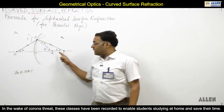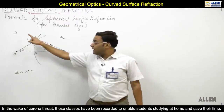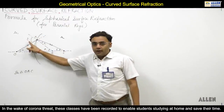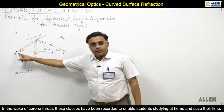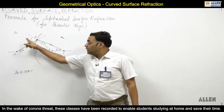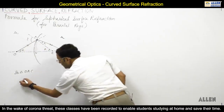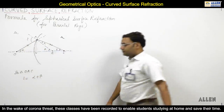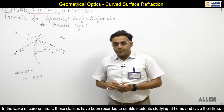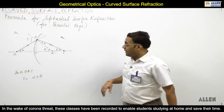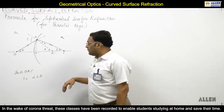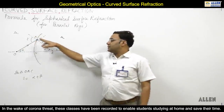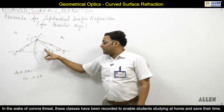This angle I is equal to alpha plus beta — that is, I equals alpha plus beta. And if I look at triangle ACI, this angle is an exterior angle, which equals beta.